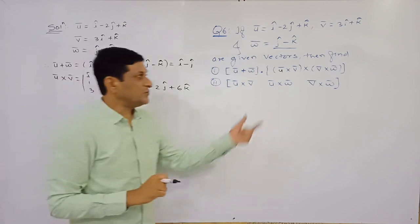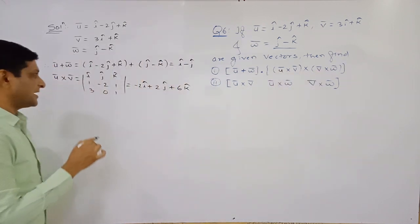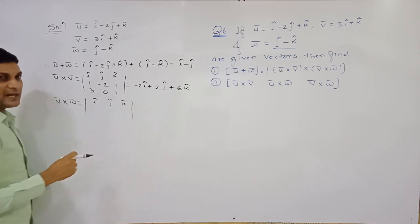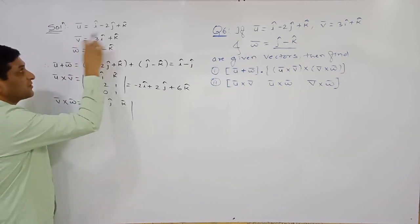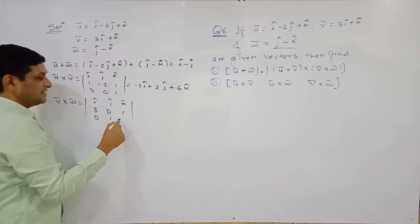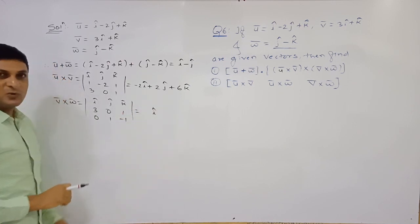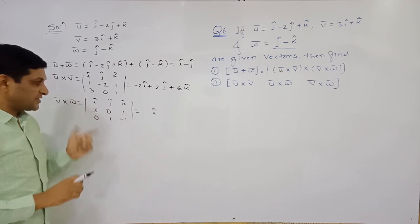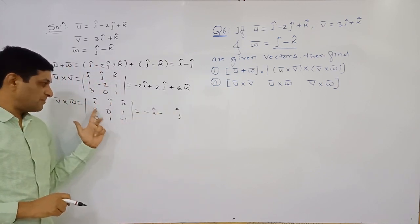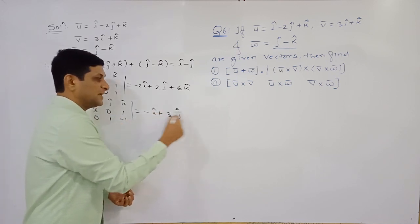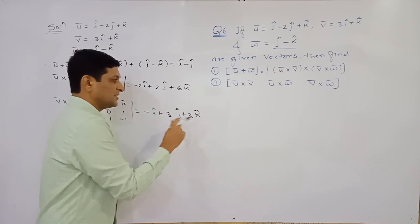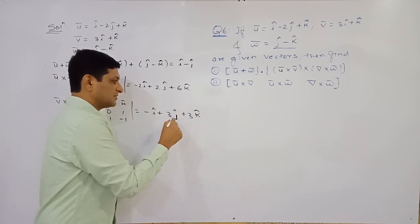The third required value is v̅ × w̅, again using a determinant. First row: i, j, k. Second row (from v̅): 3, 0, 1. Third row (from w̅): 0, 1, −1. Coefficient of i cap: (0)(−1) − (1)(1) = −1. Coefficient of j cap: taking −j cap, (3)(−1) − (0)(1) = −3, so +3. Coefficient of k cap: (3)(1) − (0)(0) = 3. So v̅ × w̅ = −i cap + 3j cap + 3k cap.